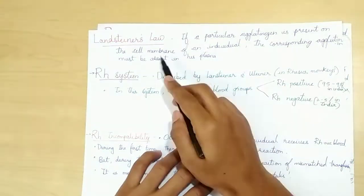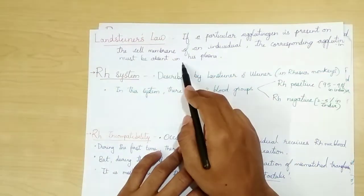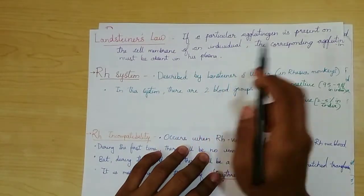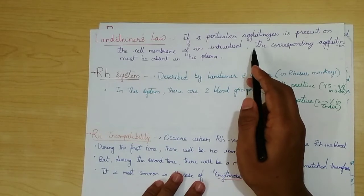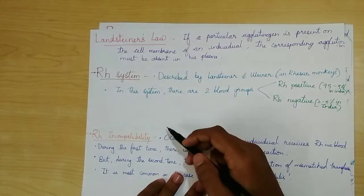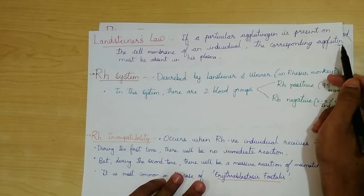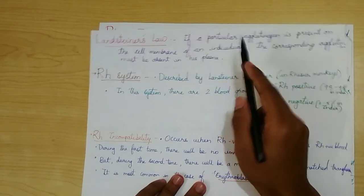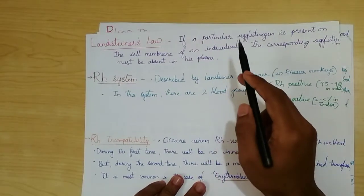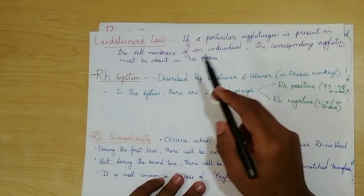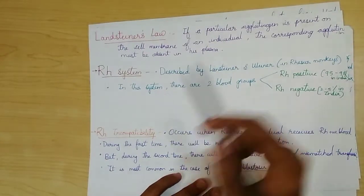Landsteinner's law states: if a particular agglutinogen is present on the cell membrane of an individual, the corresponding agglutinin must be absent in his plasma. This is an important law in blood transfusions. In the ABO system, if the corresponding agglutinin is present in the plasma of an individual, it may lead to agglutination reactions and cause severe hemolysis.